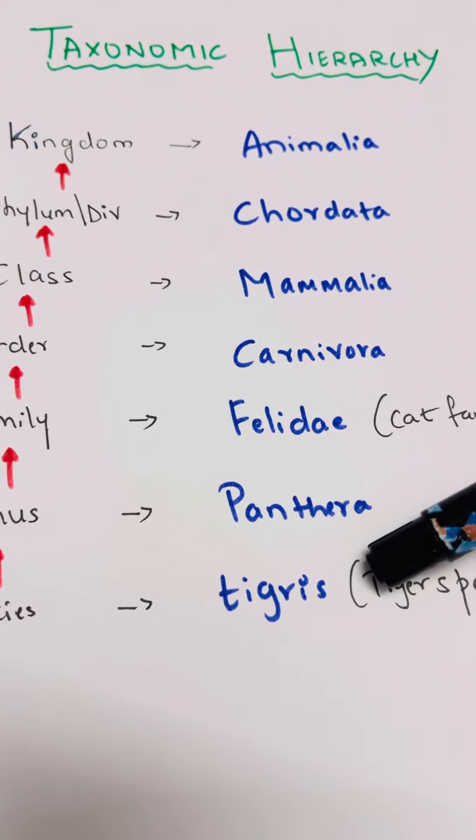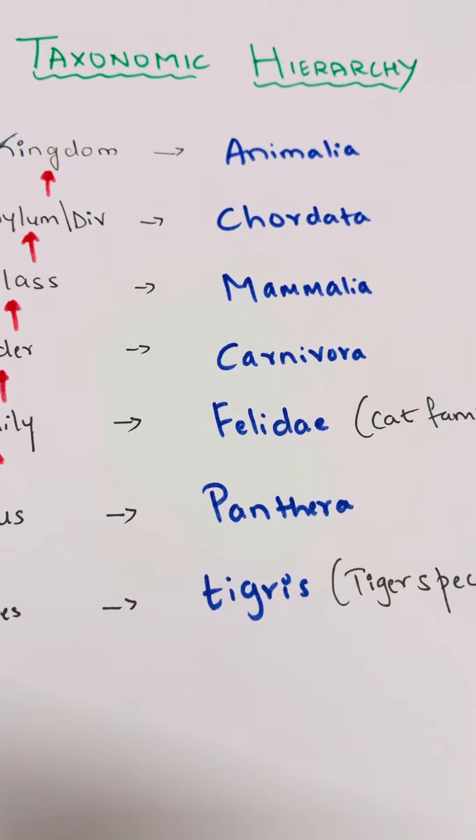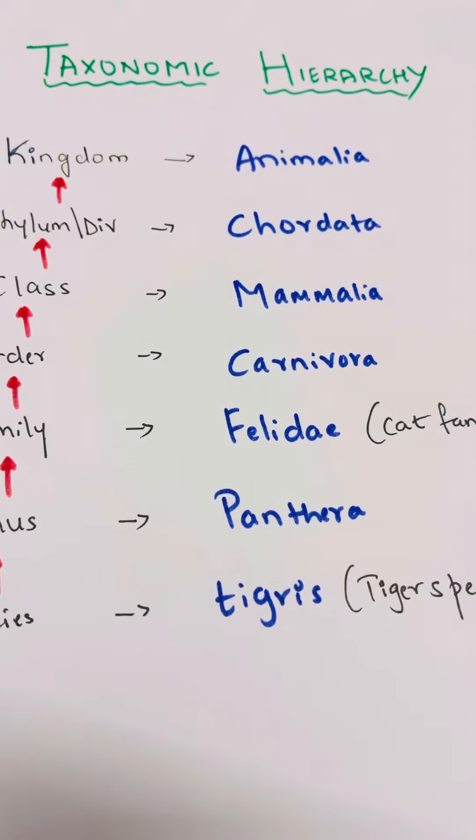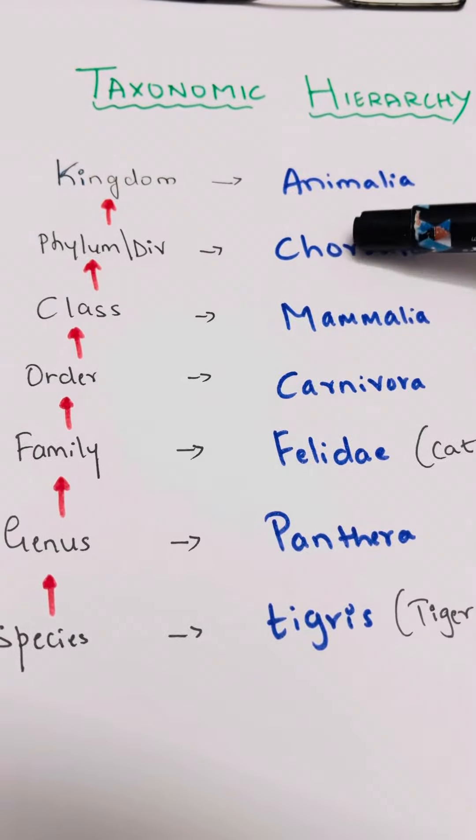And species tigris, that is tiger species. And scientific name of tiger is Panthera tigris. So this is the taxonomic hierarchy.